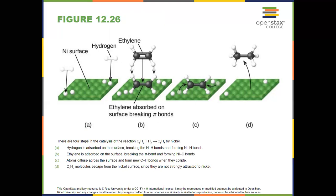Know how to identify from a reaction coordinate diagram if a catalyst is present — you'll see the activation energy go down. If you see something get introduced in the very first step of a reaction and then spit back out at the end — introduced in the first step and regenerated in the final step — that's also a catalyst when looking at a mechanism. Know everything covered in 12.6 and you'll be good to wrap up Chapter 12.